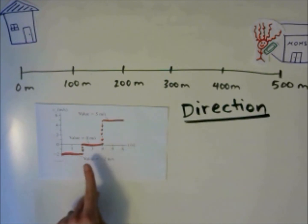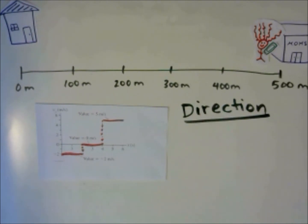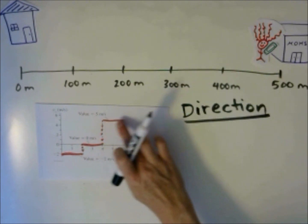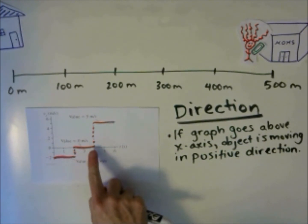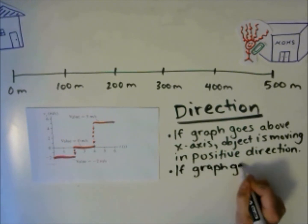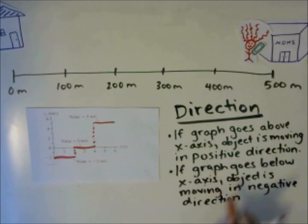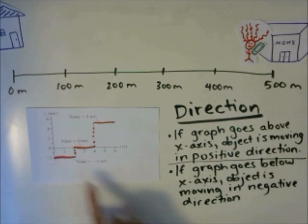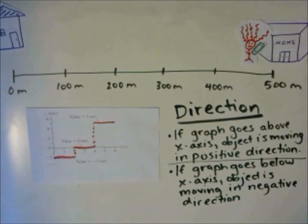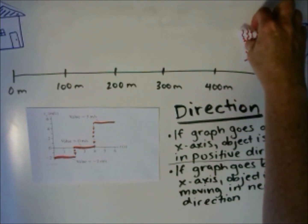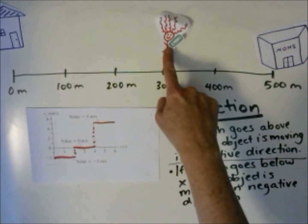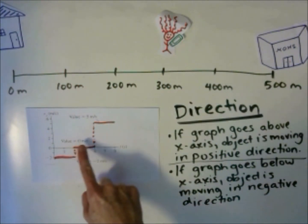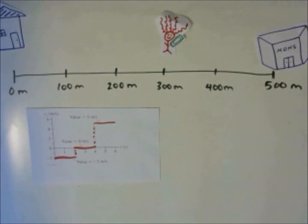You can see whether the velocity is above or below the x-axis. An object moving in the positive direction has a positive velocity — the graph is above the x-axis. If the graph is below the x-axis, the object is moving in the negative direction. For this graph, you could interpret it as: she starts moving in the negative direction, she stops, and then she moves in the positive direction. We can also look at acceleration.